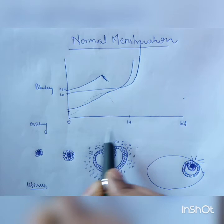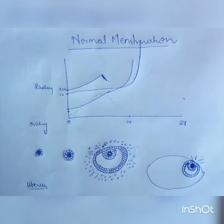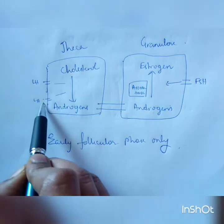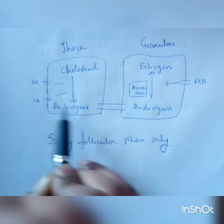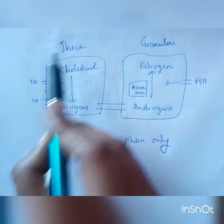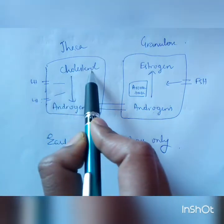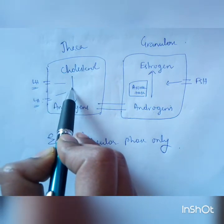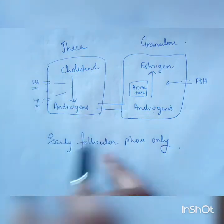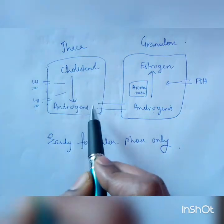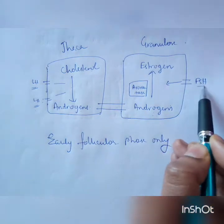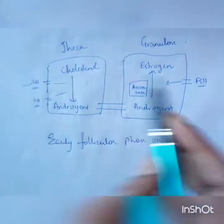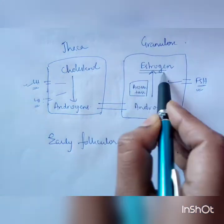In the early part of the follicular phase, theca cells have LH receptors and granulosa cells have FSH receptors — that is why the name '2-cell 2-gonadotropin theory.' Theca cells have the ability to convert cholesterol to androgens because LH acts on them. Only LH can stimulate the enzyme that does this conversion — the rate-limiting step. This androgen then travels through gap junctions to granulosa cells, where FSH stimulates aromatase to convert androgen to estrogen. So in the early part, you require baseline LH activity and increased FSH activity to produce estrogen.